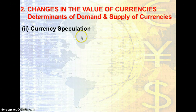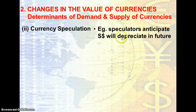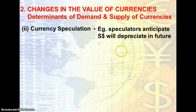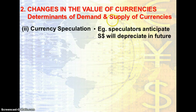The next determinant is currency speculation. For example, a speculator who anticipates that the Singapore dollar will depreciate in future will do something known as short selling. They will sell off the asset — in this case, the Singapore dollars — because the value is still higher right now compared to what they anticipate the depreciation will be in future. Later on, when the Singapore dollar depreciates, they will purchase back the Singapore dollars at a lower price. Due to the difference in the value, the speculator earns money in between.